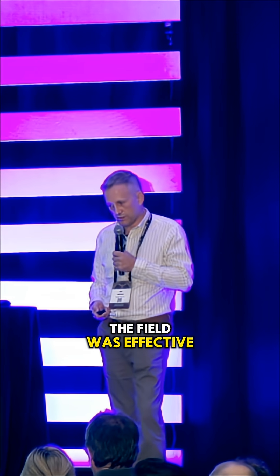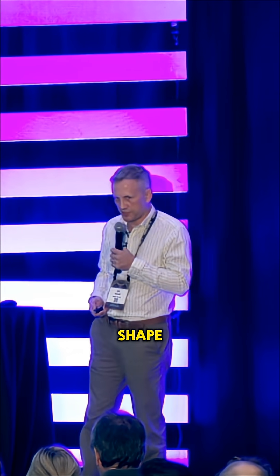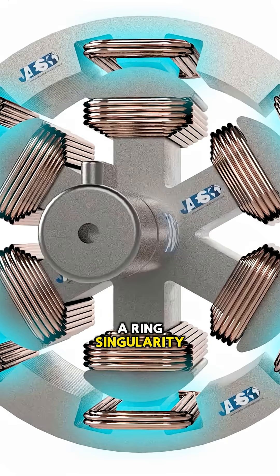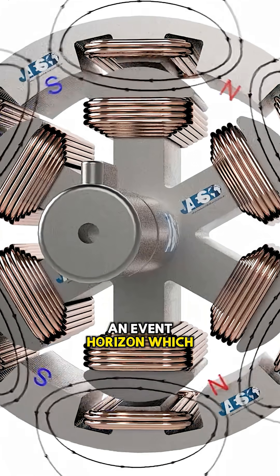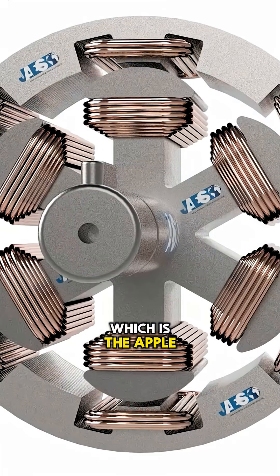The field was effective in an oblate spheroidal shape. Why is that important? Because a ring singularity produces a non-radiating boundary and event horizon, which is an oblate spheroidal shape, which is the apple.